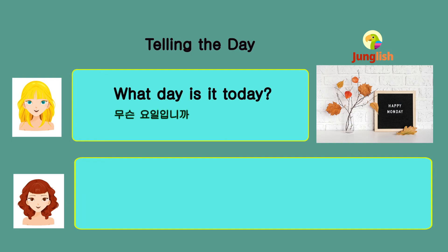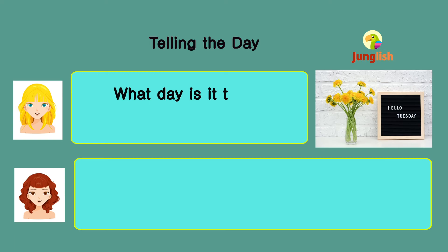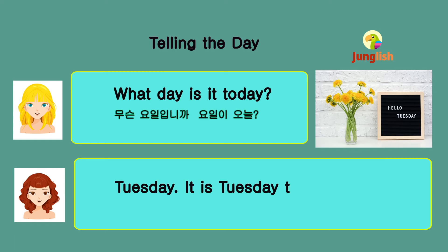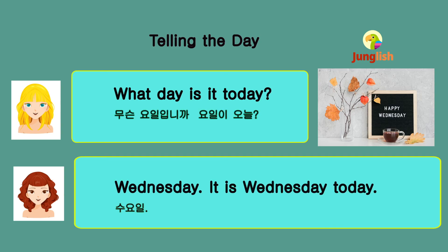What day is it today? Monday. It is Monday today. Monday. It is Monday today. What day is it today? Tuesday. It is Tuesday today. Tuesday. It is Tuesday today. What day is it today? Wednesday. It is Wednesday today. Wednesday. It is Wednesday today.